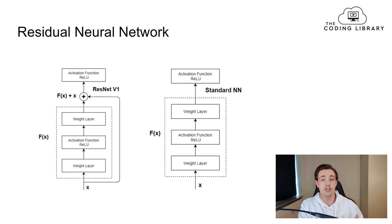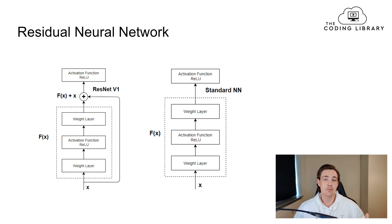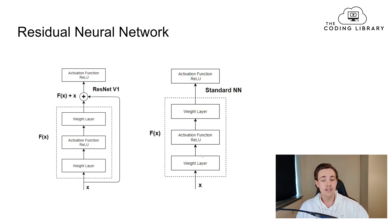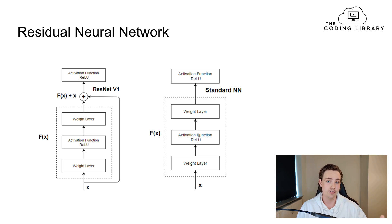We're going to talk about the residual neural network with these individual residual blocks inside. Starting with the standard way of creating a convolutional neural network: we have an input X, which goes into a weight layer where we do the convolution operation. Then we pass that to an activation function layer - often the ReLU activation function. Then we pass it through another weight layer, then another activation function layer, and so on. This is the basic block of a standard convolutional neural network.